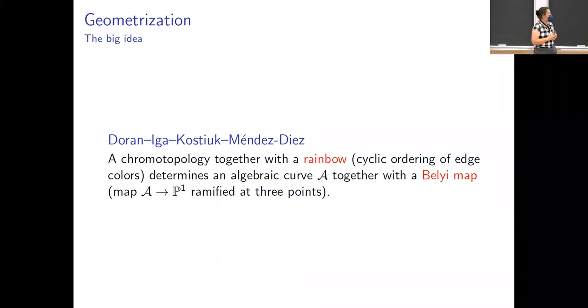We want to geometrize. So we're going to take our chromo-topology and we're going to throw in our rainbow. Got to use the rainbows. A rainbow for us is going to be a cyclic rainbow. You go around the rainbow, you end up back at the beginning of the rainbow. If we've got that information, we're going to be able to build an algebraic curve. And it's also going to come with a Belyi map, which means that we're going to have a map to P1 that's ramified at three points.